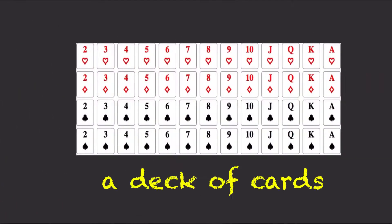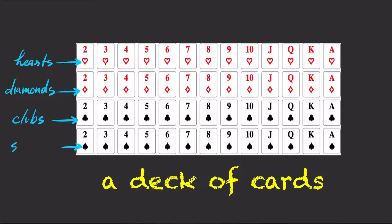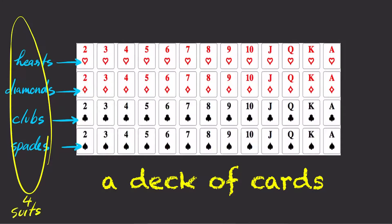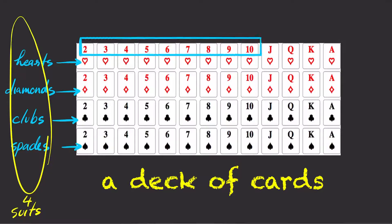In a deck of cards, there are 4 suits: clubs, diamonds, hearts, and spades. Each suit has 13 cards, and 9 of them are number cards.